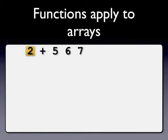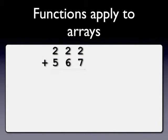The programmer specifies the single number, the function, and the list. The J interpreter does the rest.